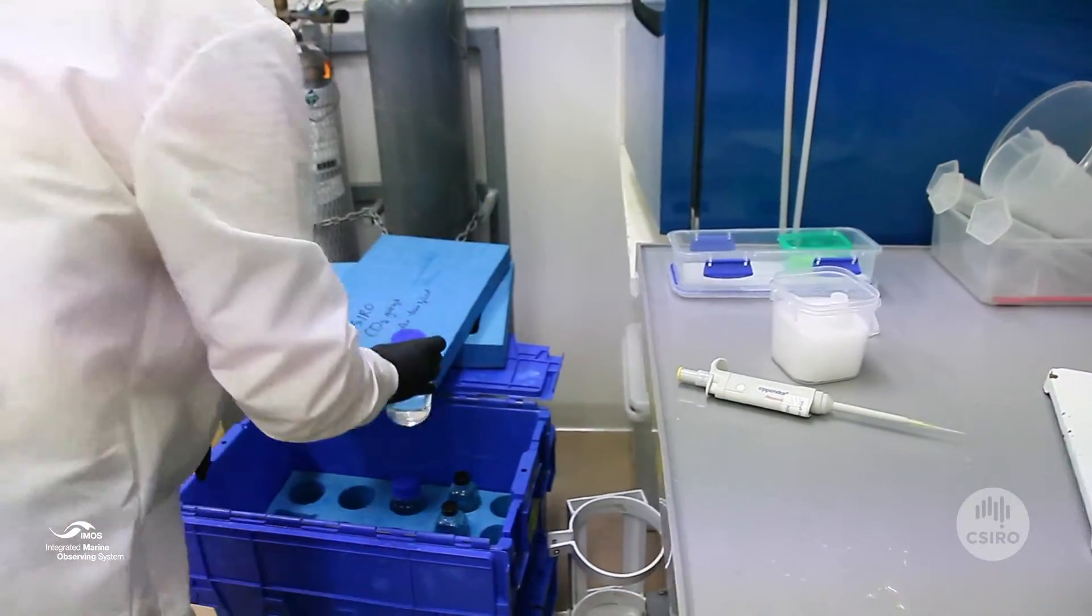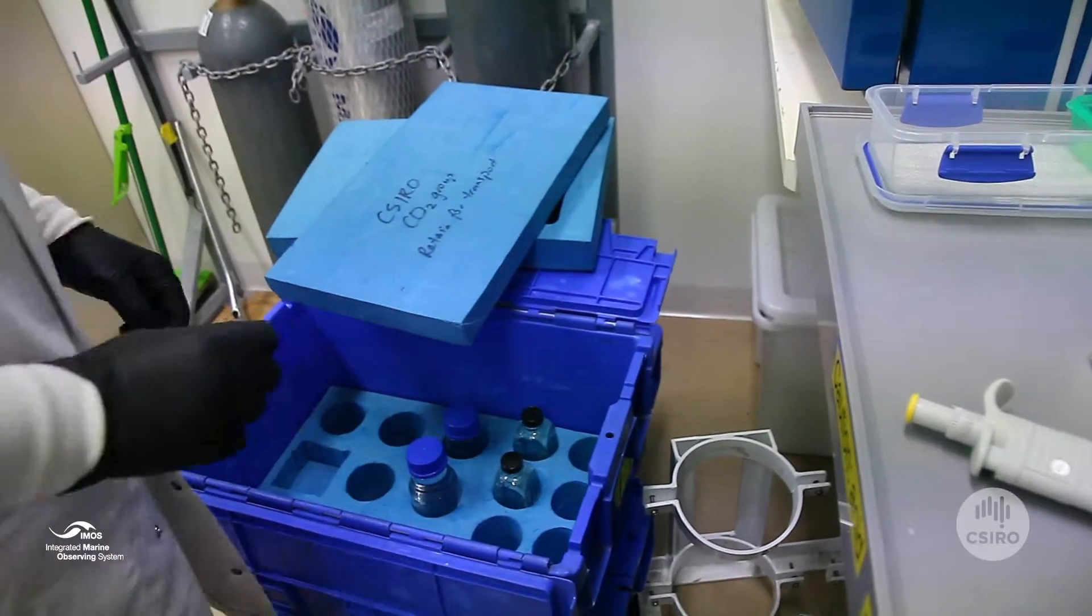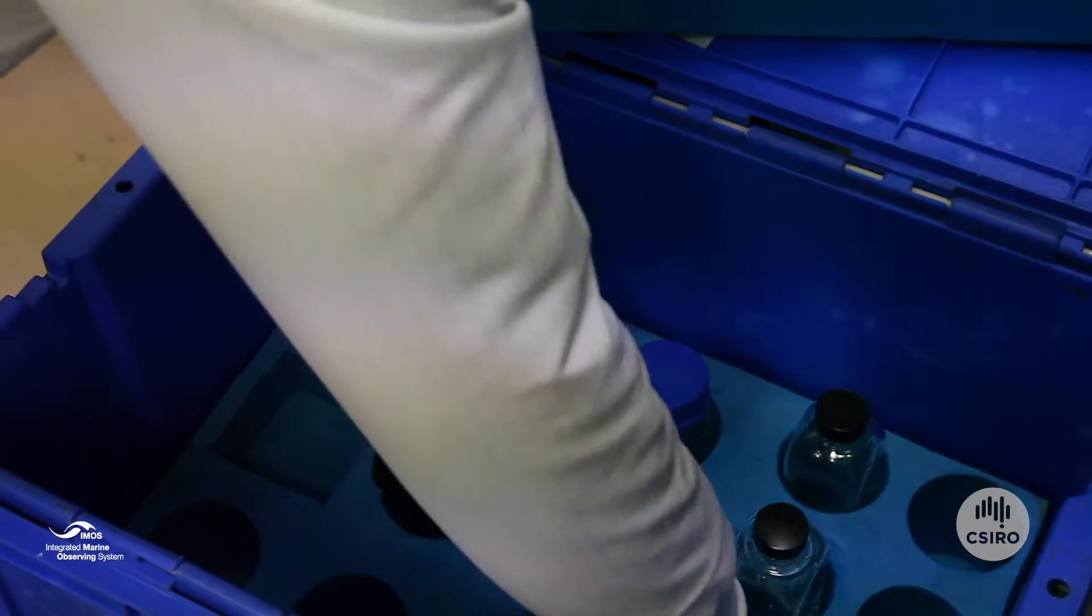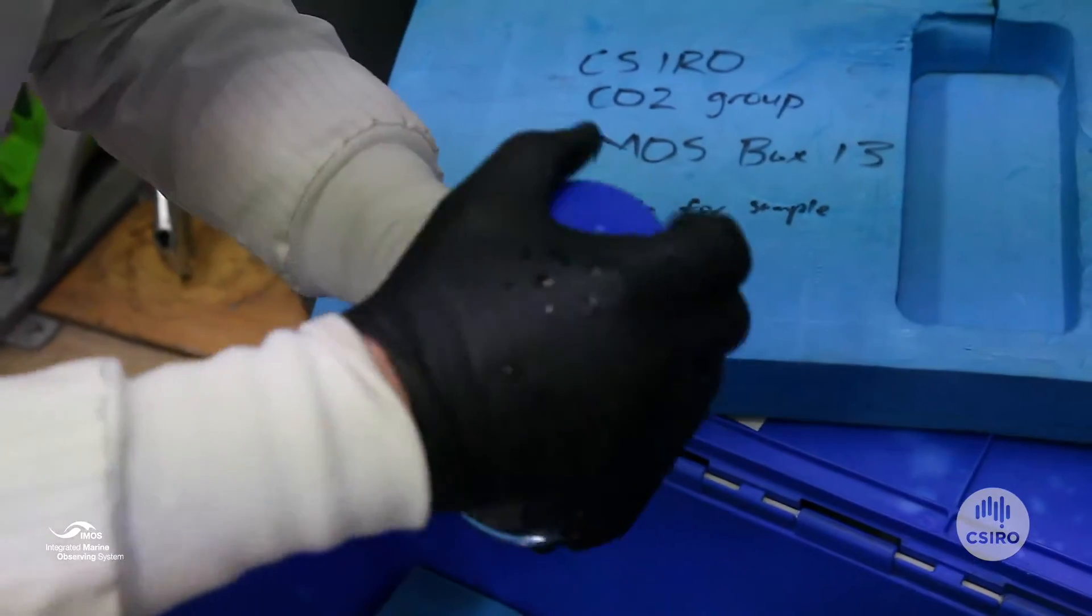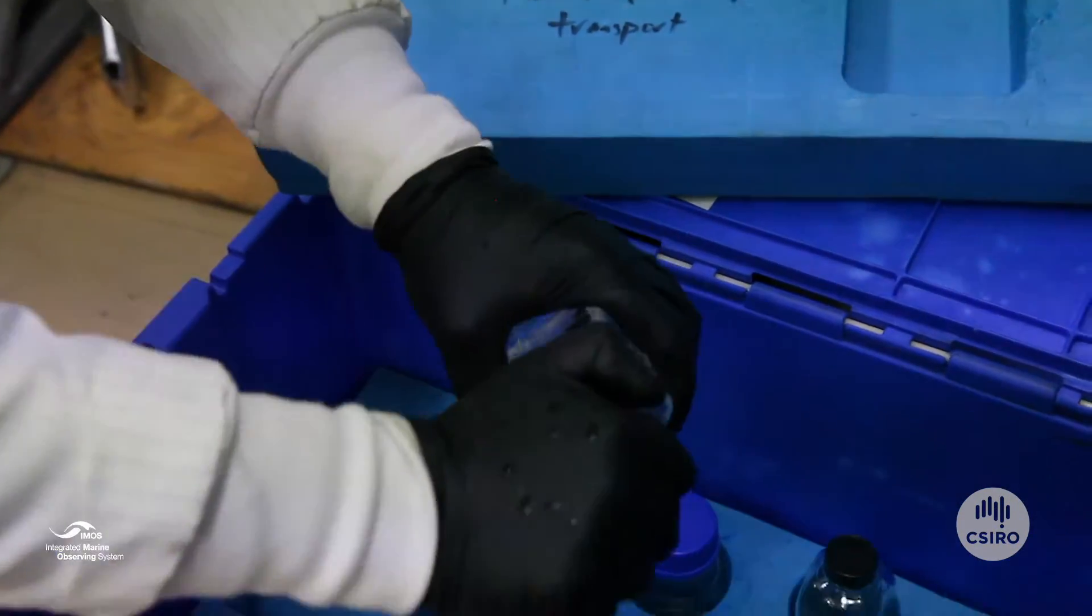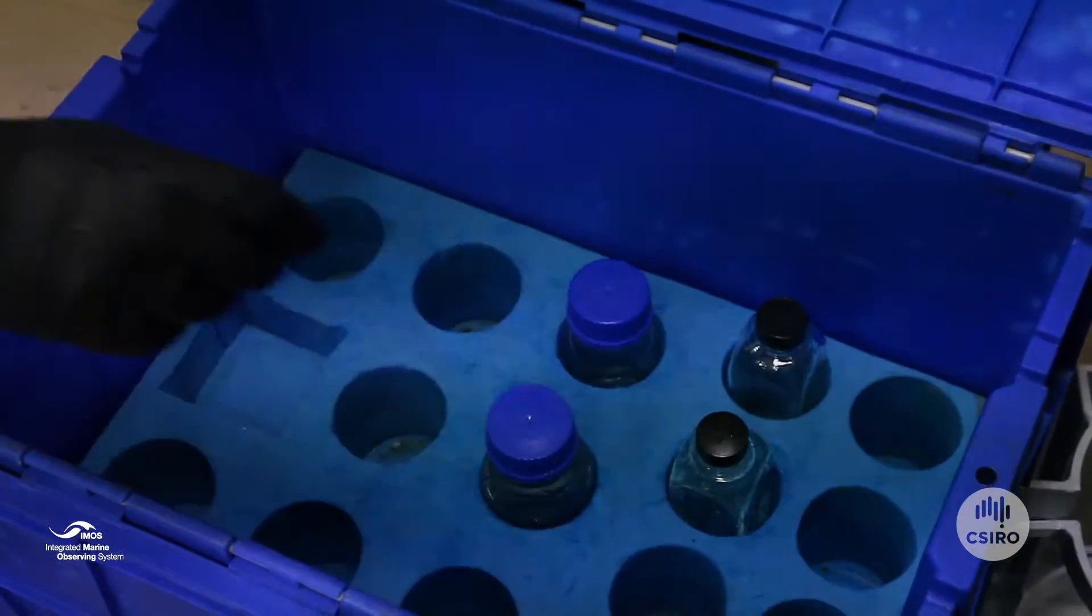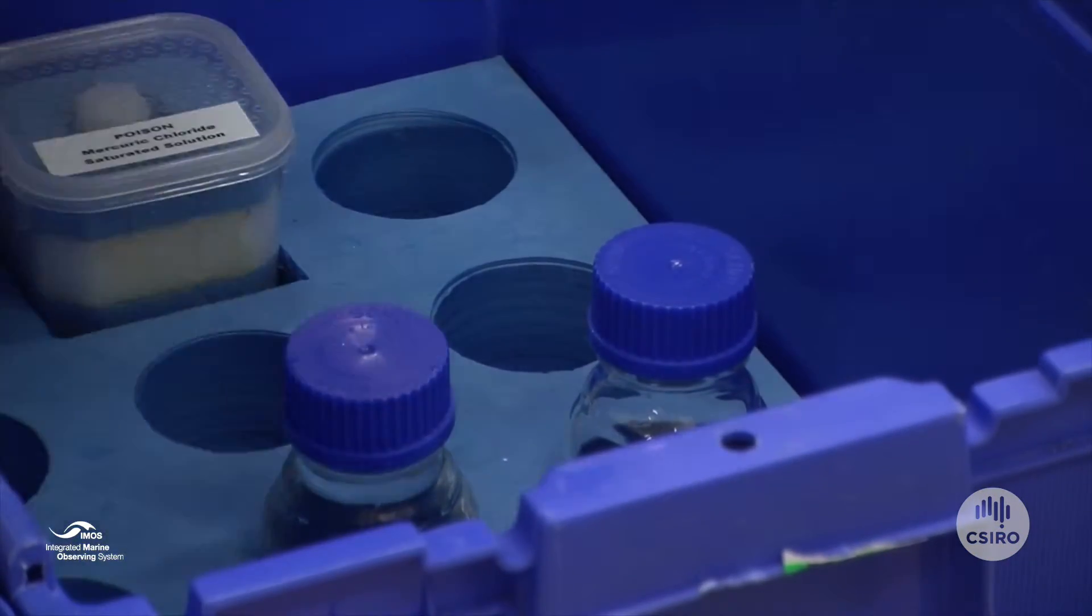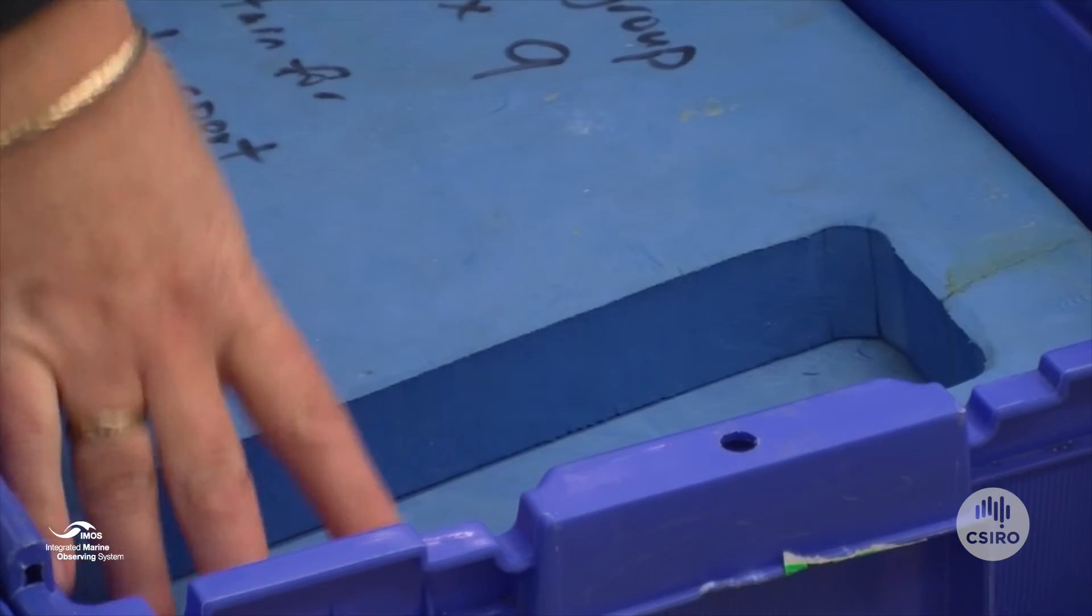When you finish sampling for the day, please tighten the lids again because changes in temperature can make them quite loose. Put the mercuric chloride back in the box and the lid back on, and you're ready to go.